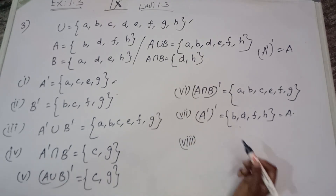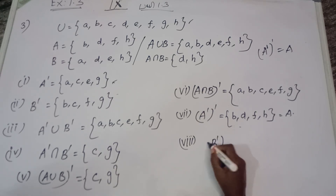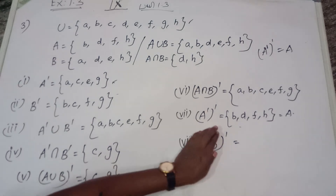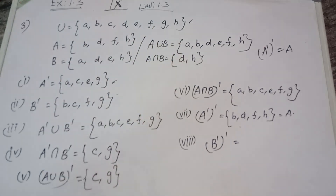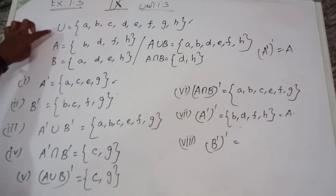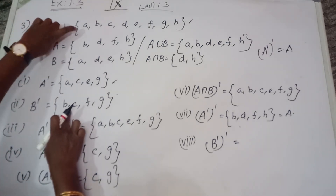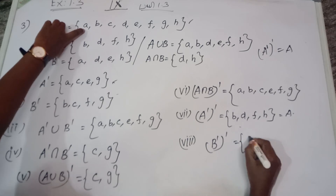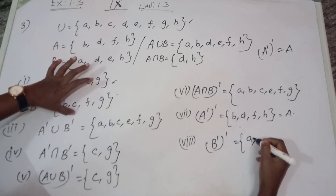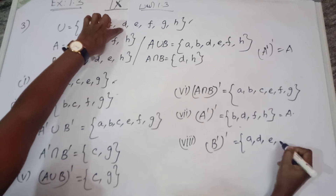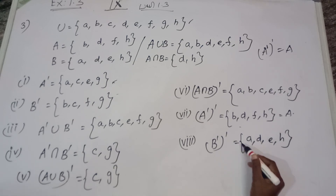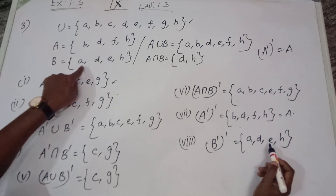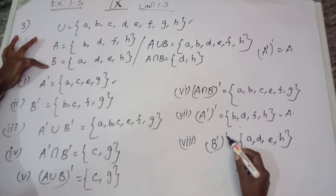The eighth sub-question: B dash the whole dash — (B')'. The element which is not in B dash but in the universal set. B dash the whole dash — similarly, (B')' = B. So B dash the whole dash is nothing but B.